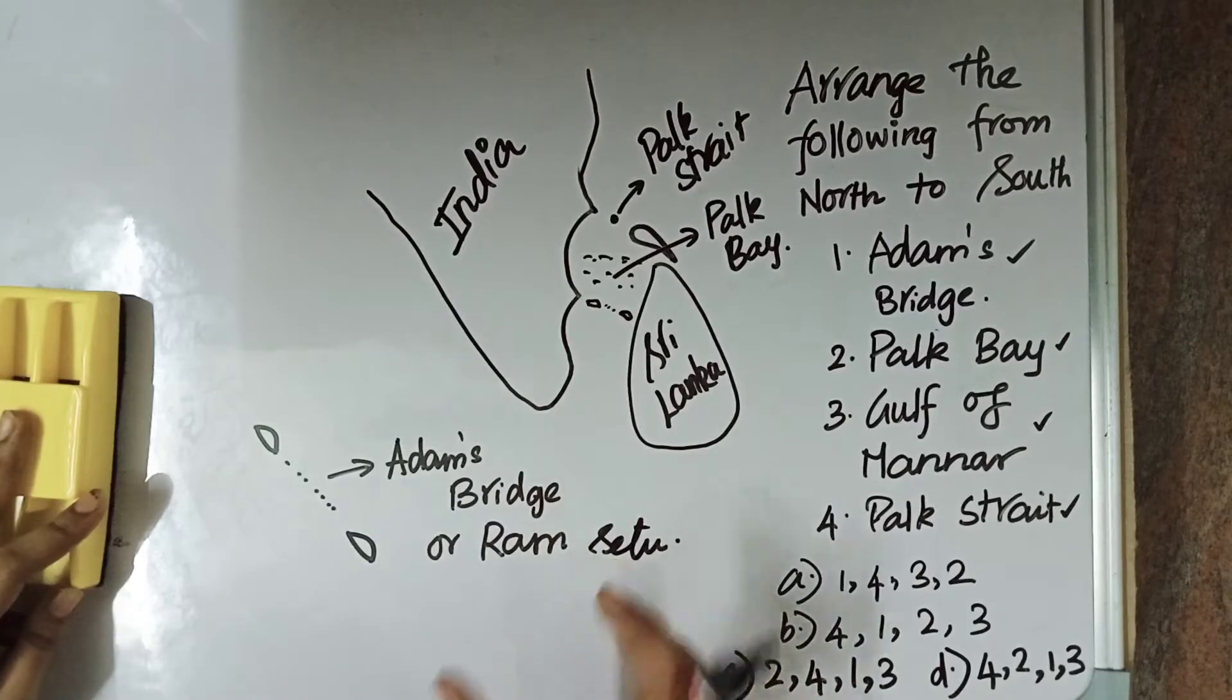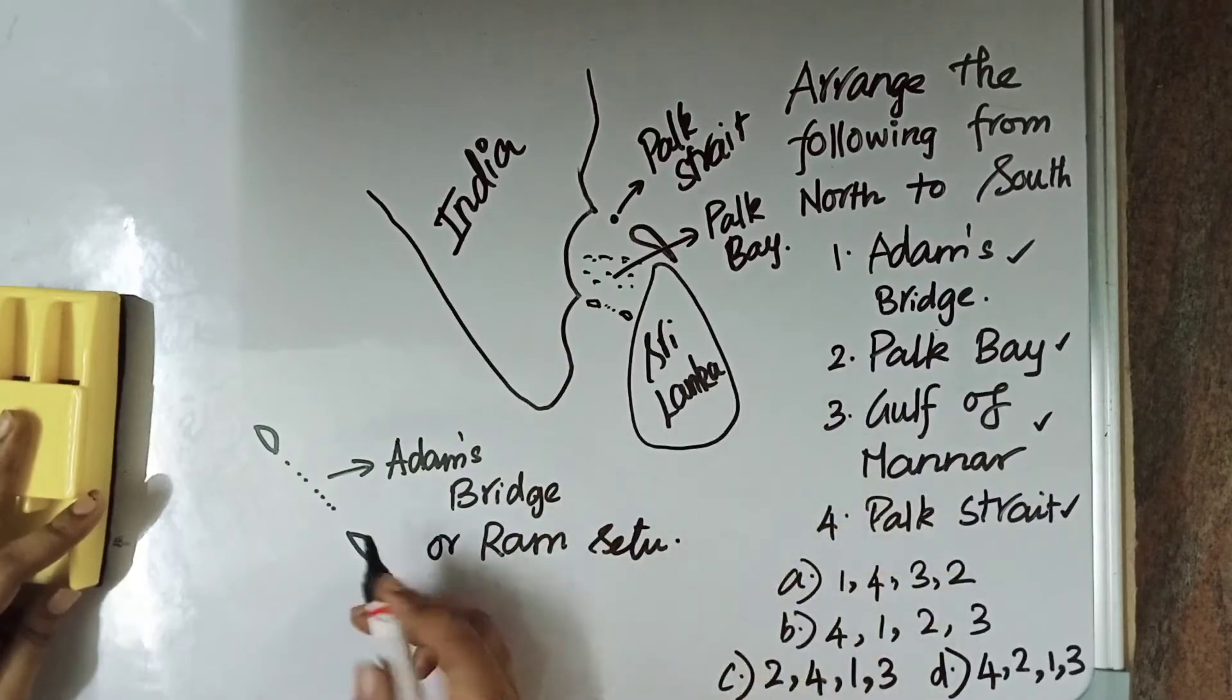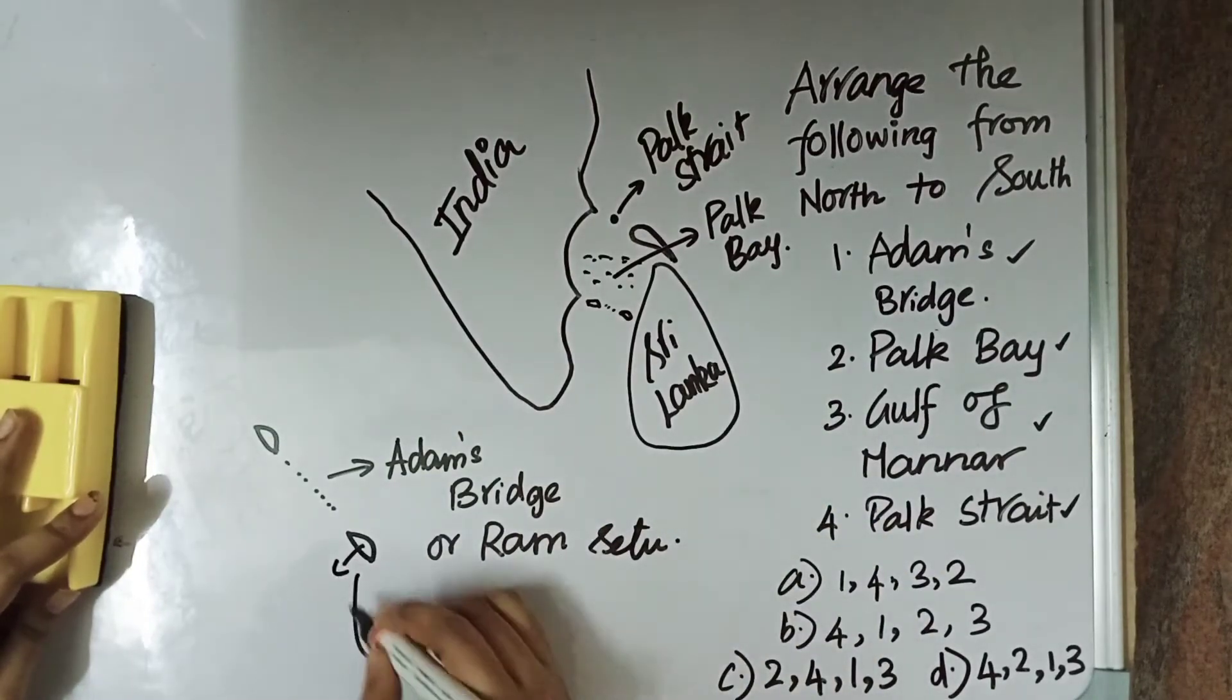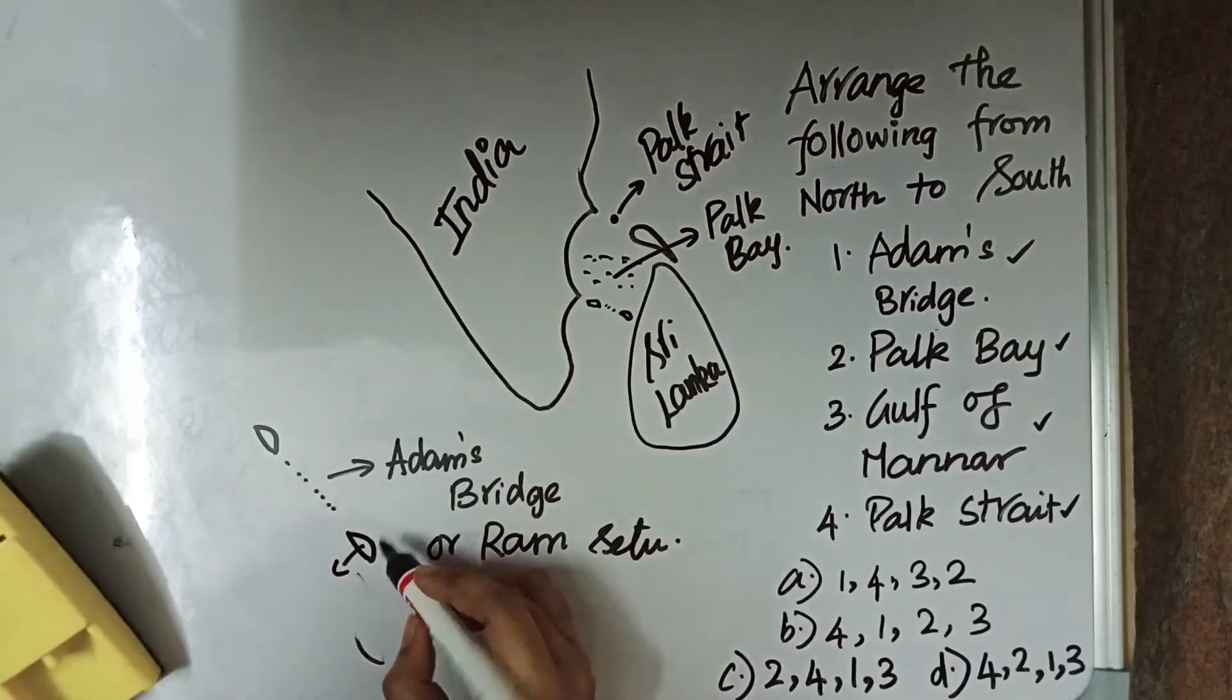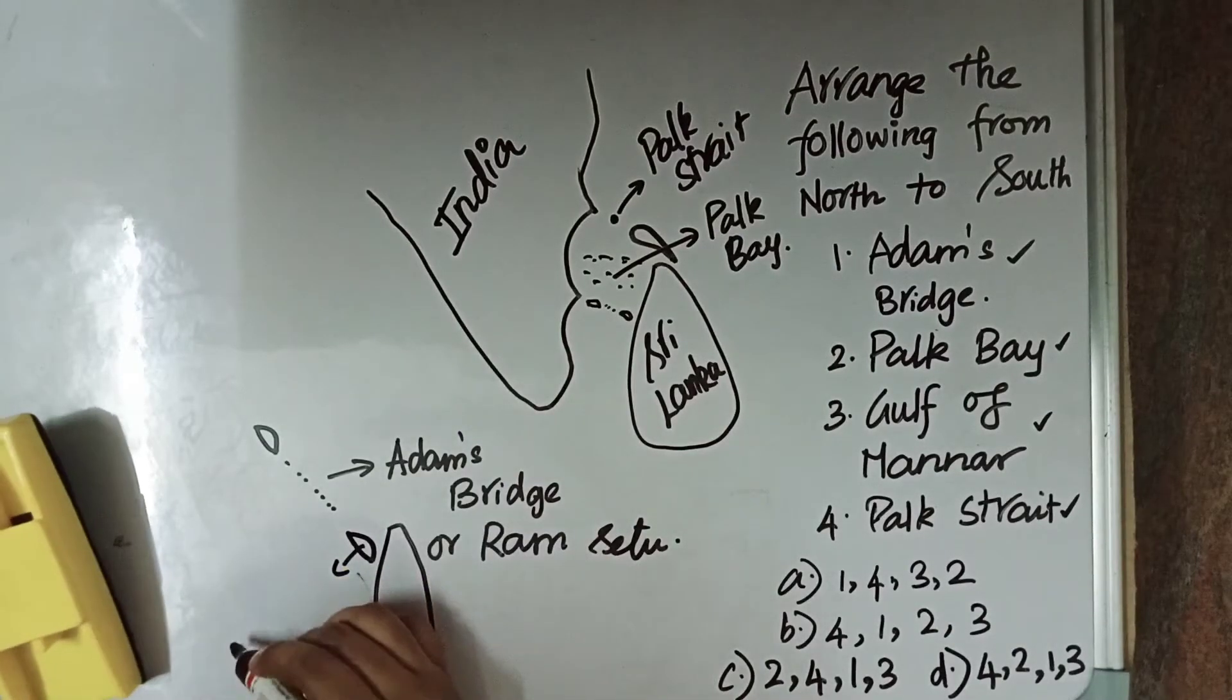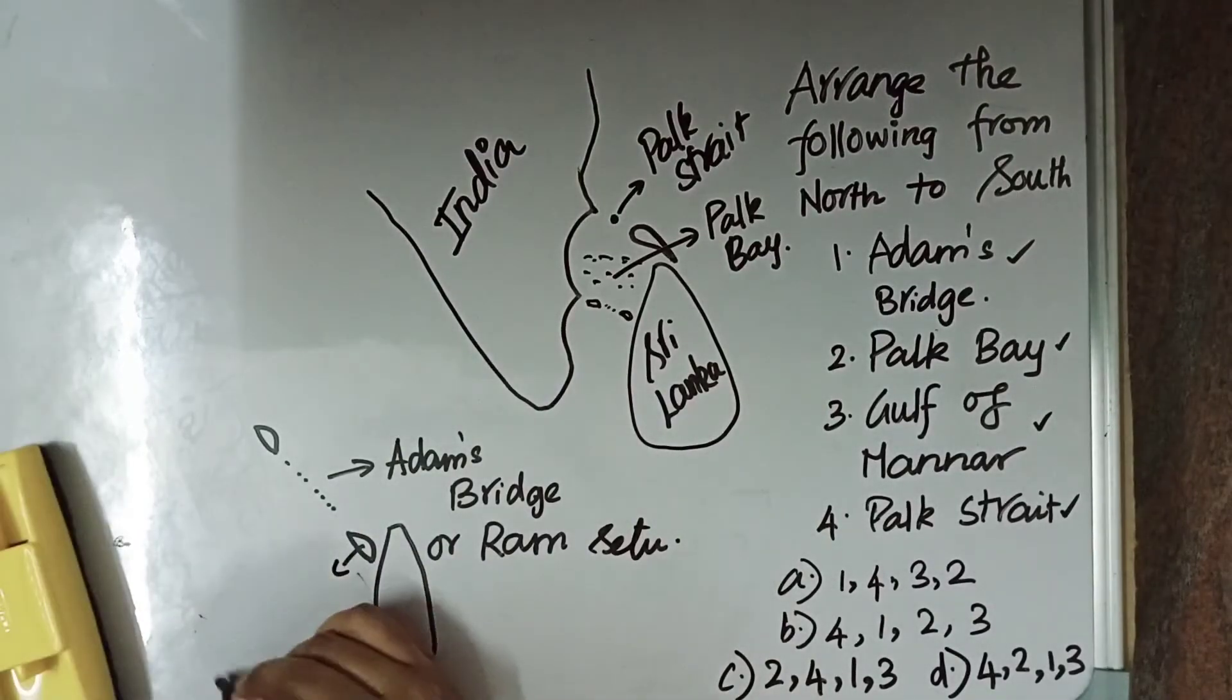Actually this Adams Bridge is between Danushkodi in the Pamban Island or Rameshwaram Island and on the Sri Lankan side we have Manar Island. On the Sri Lankan side we have Manar Island.